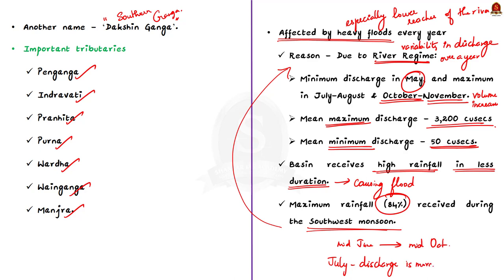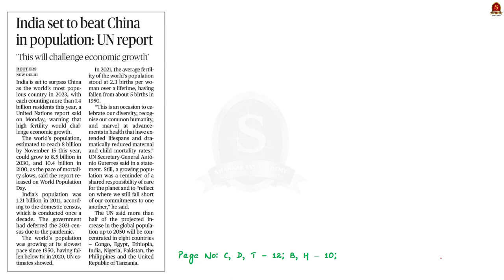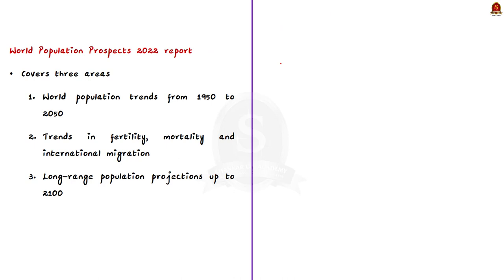This news article appeared for two reasons. First, yesterday - 11th July - was observed as World Population Day. Second, the Department of Economic and Social Affairs of the United Nations Secretariat released the World Population Prospects 2022 report on that occasion. This report deals with three main areas: world population trends from 1950 to 2050, trends in fertility, mortality, and international migration, and long-range population projections up to the year 2100.